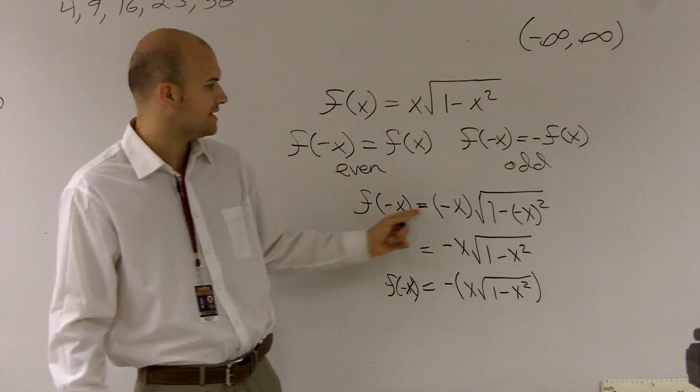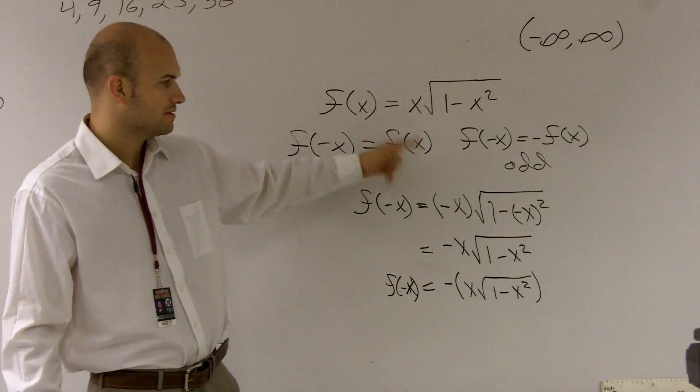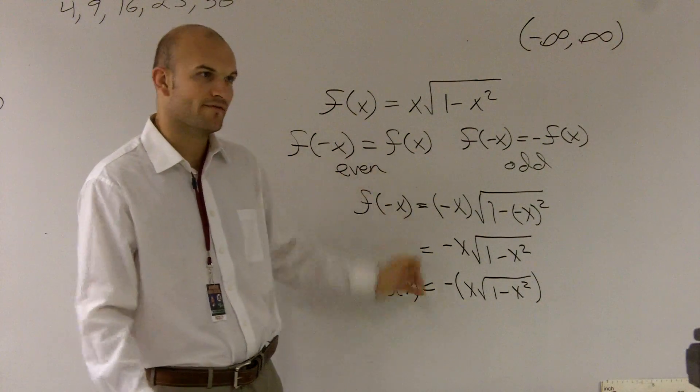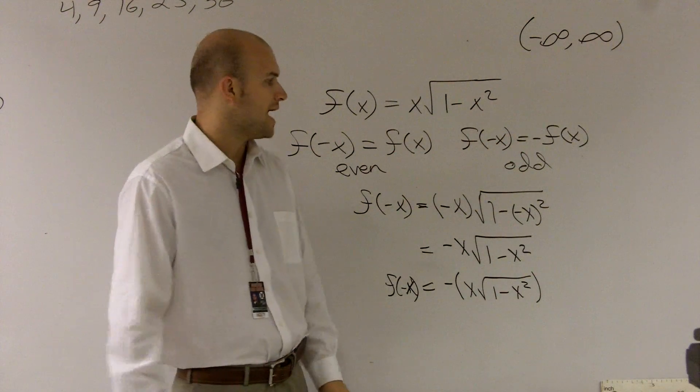If, in return, when I would have plugged in f of negative x, and I would have got out back f of x, then it would have been even. Or if I would have got something totally different, neither one of these, then it would have been neither odd nor even.